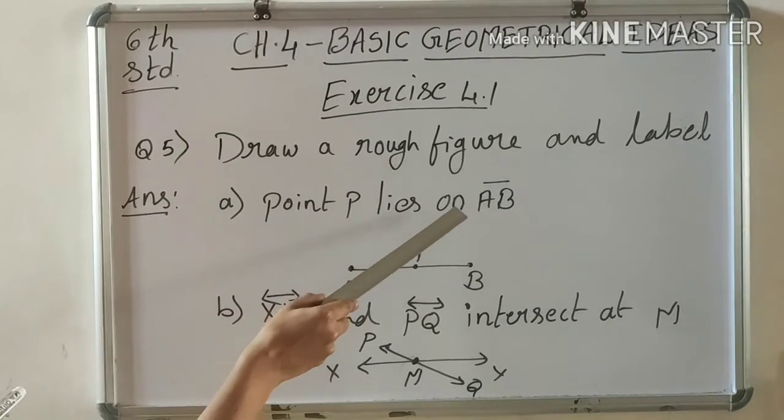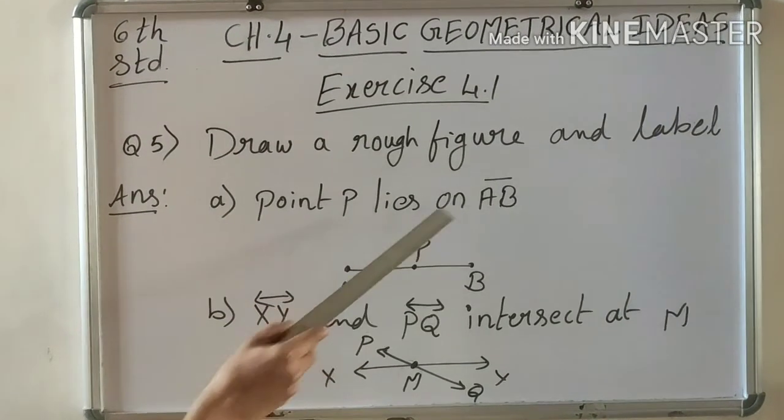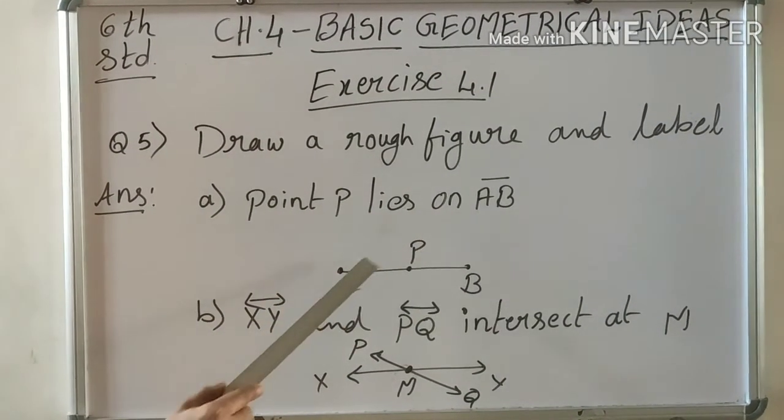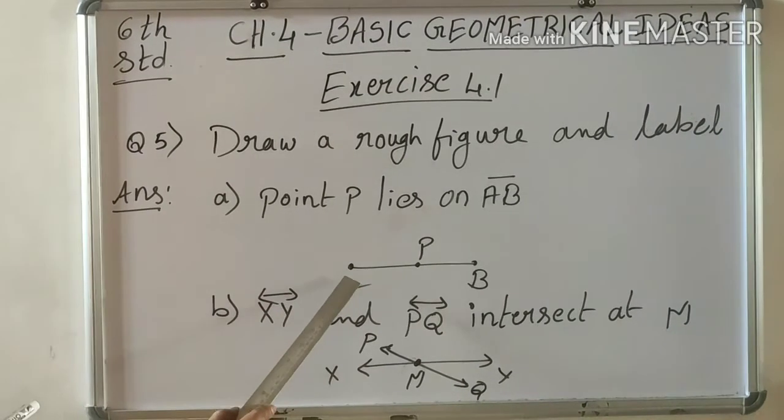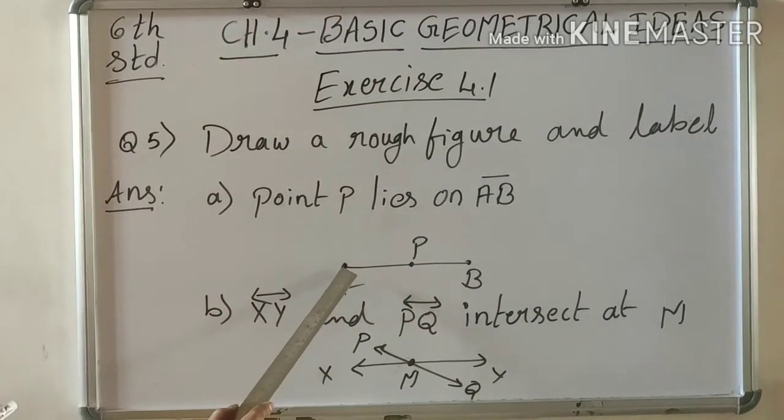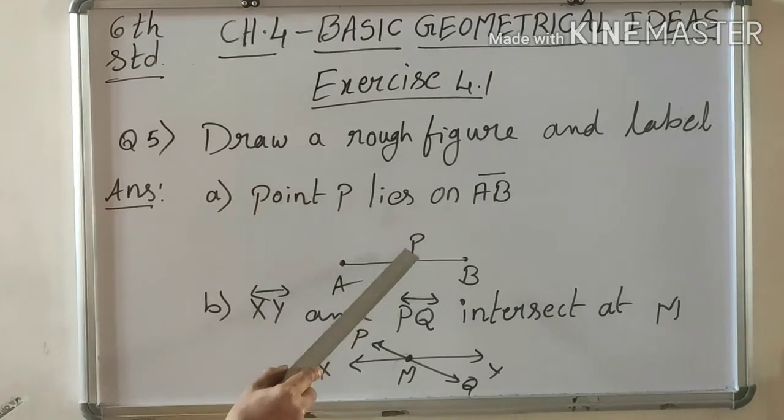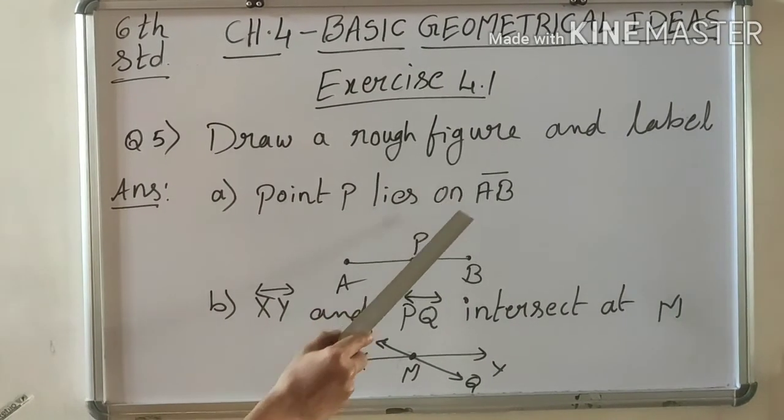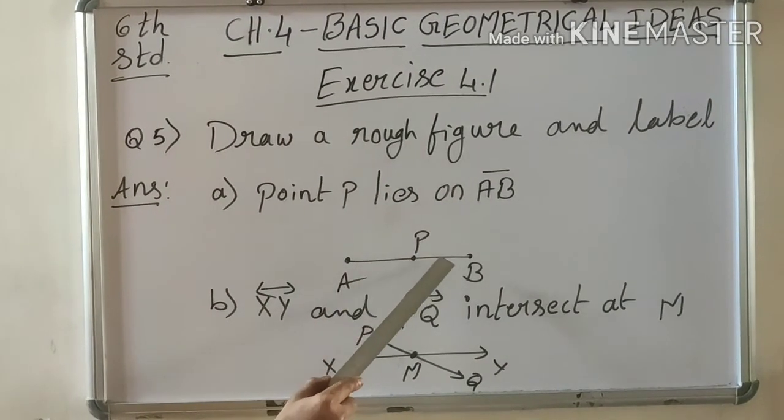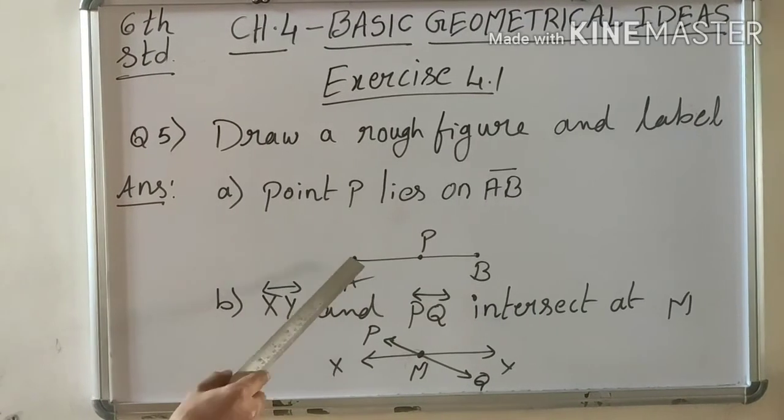First one: point P lies on line segment AB. Here AB is a line segment. Draw the line segment this way with fixed distance. And P lies on AB, that means point P should be on AB.